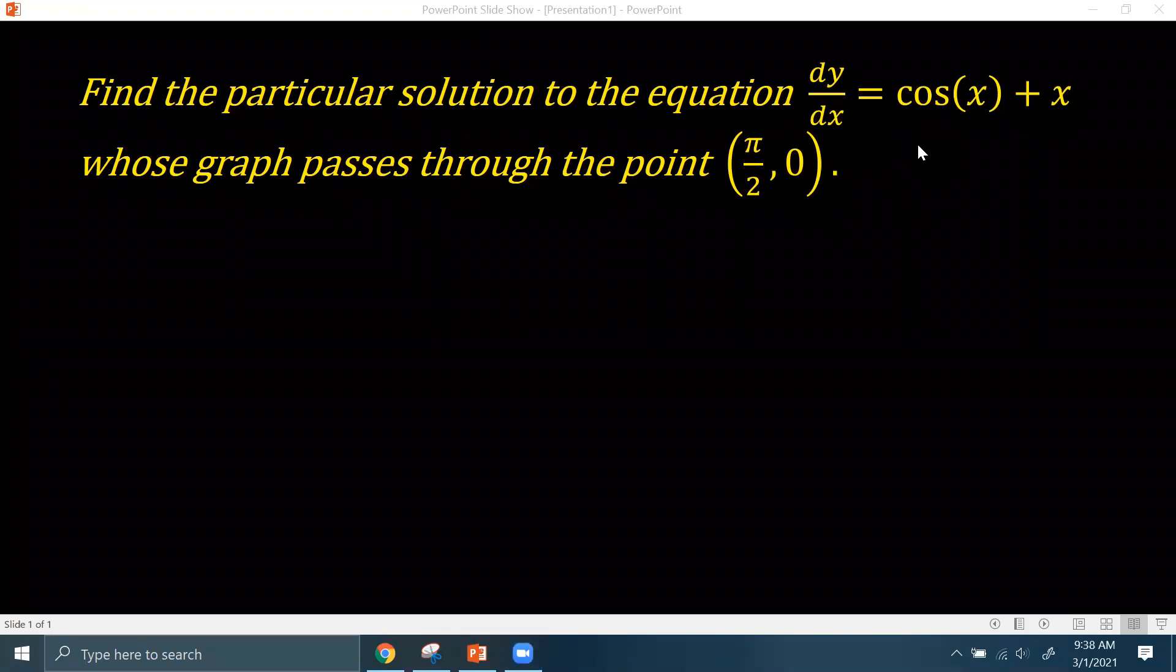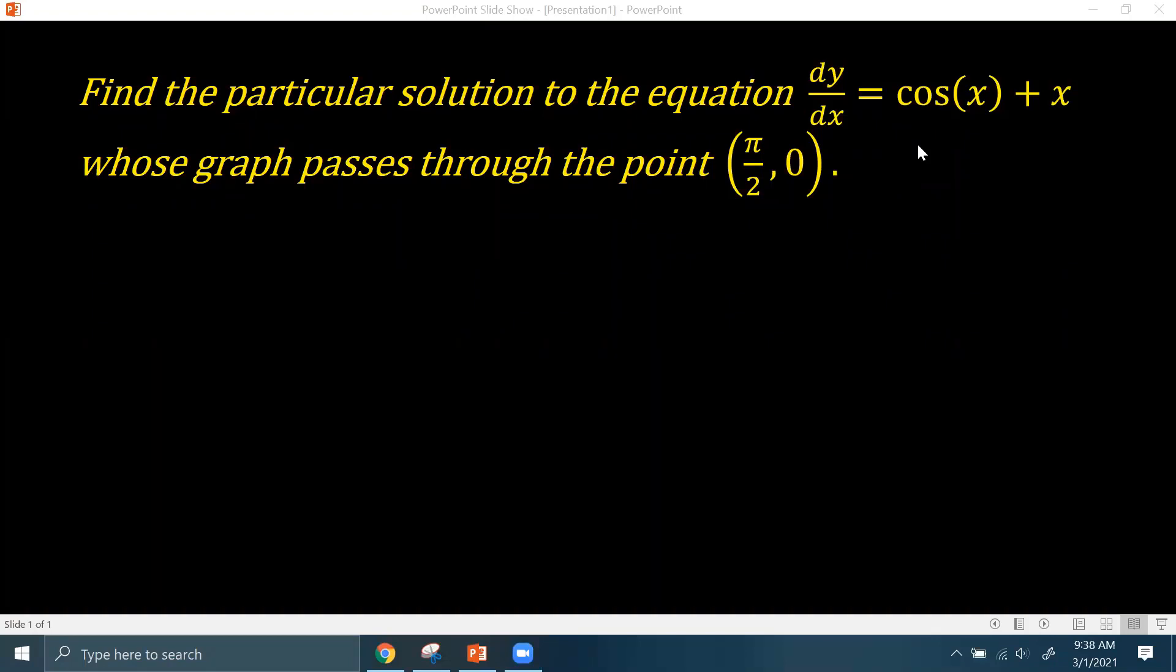So the first thing we want to do is find the antiderivative of cosine x plus x. So y equals sine x plus one half x squared plus c. Now this is called the general solution, because you have the plus c in your equation.